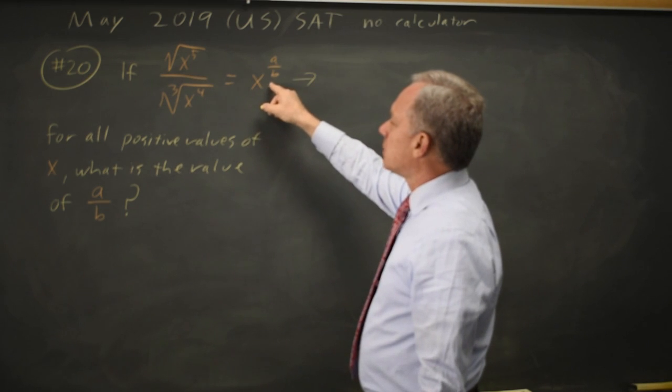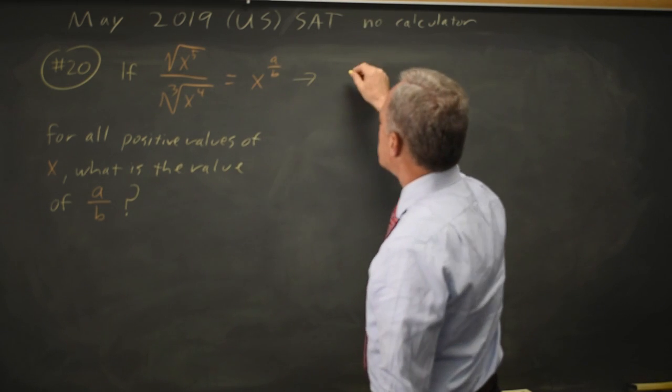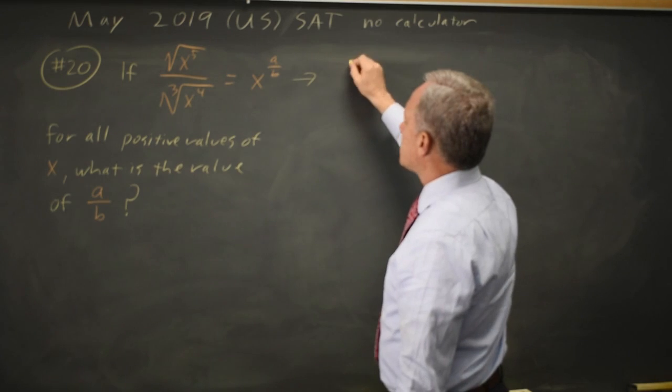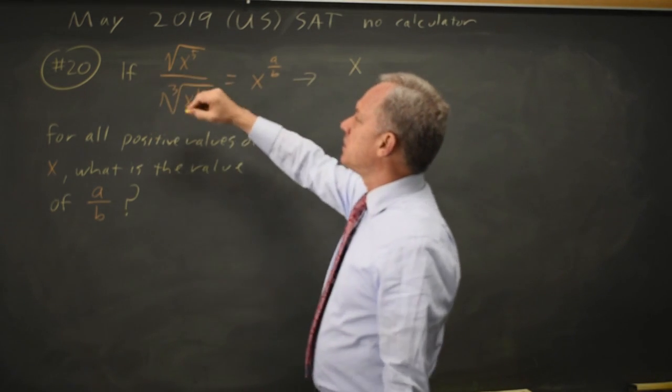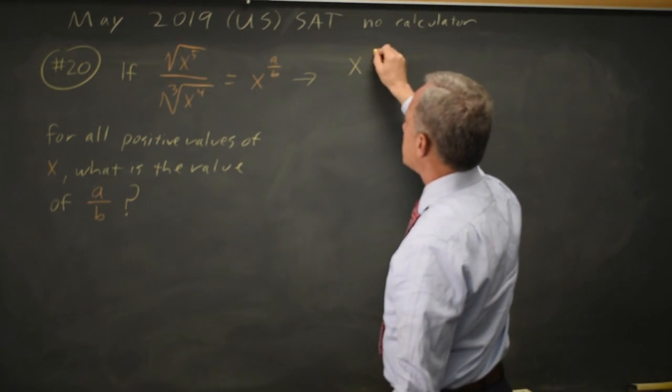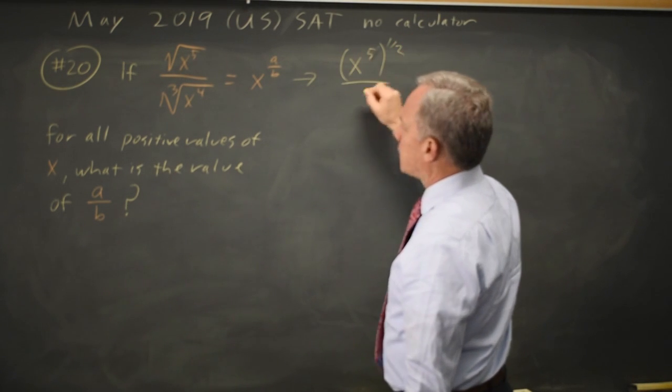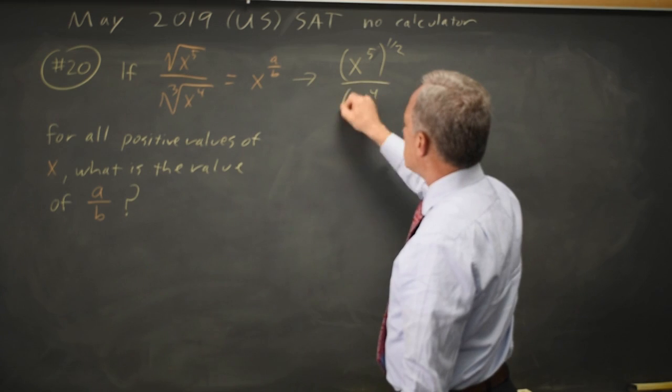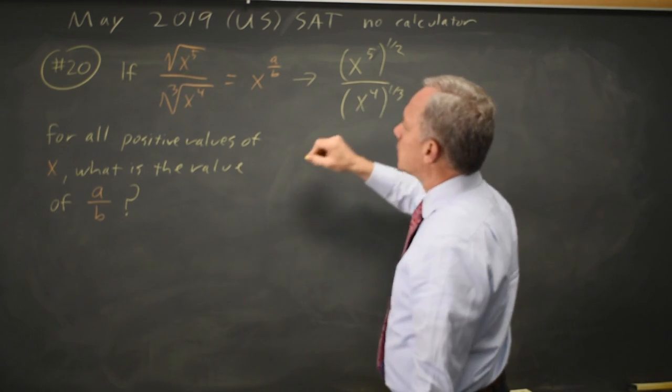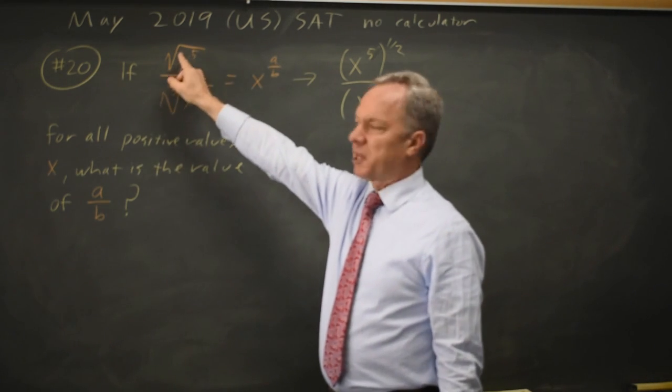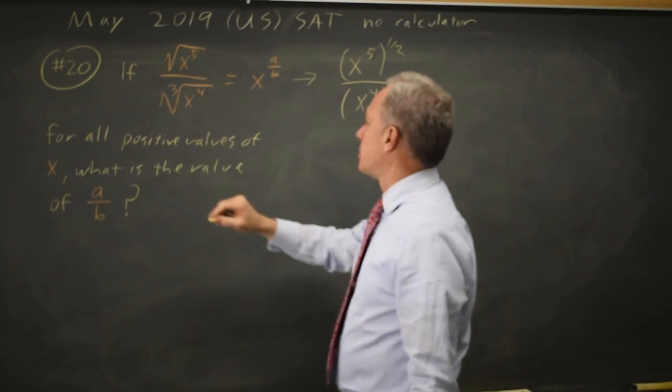Since the answer is in the form of an exponent, I'm going to convert my radicals to exponents. x to the 5 square root is x to the 5 to the 1 half. And x to the 4 cube root is x to the 4 to the 1 third, because the square root is 1 half power and a cube root is 1 third power.